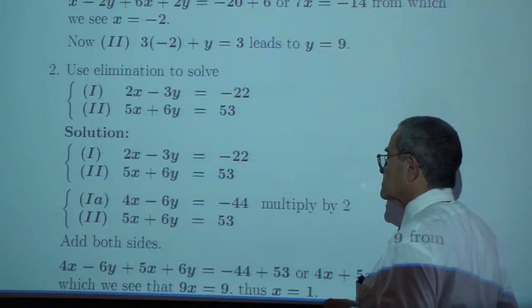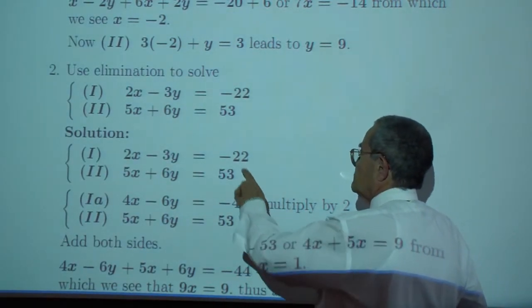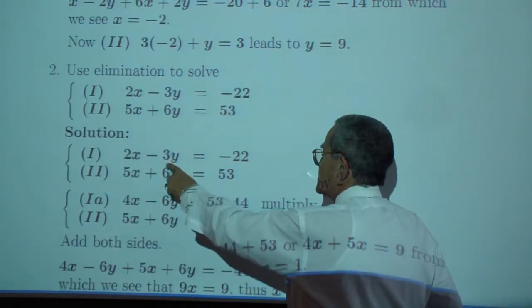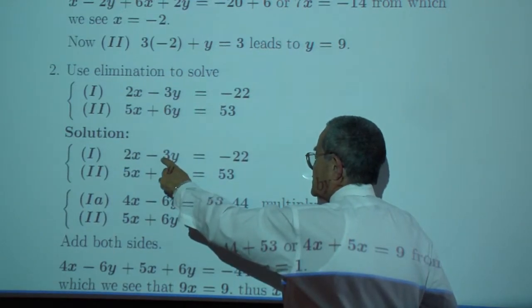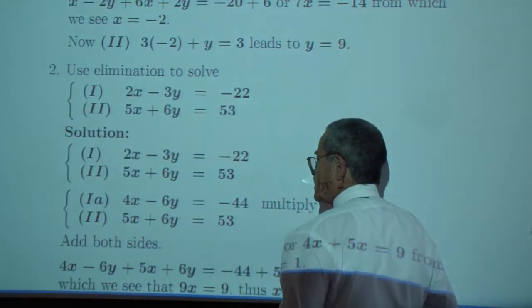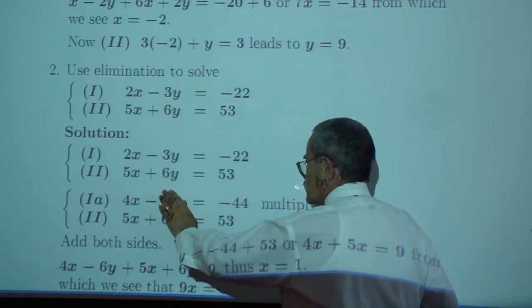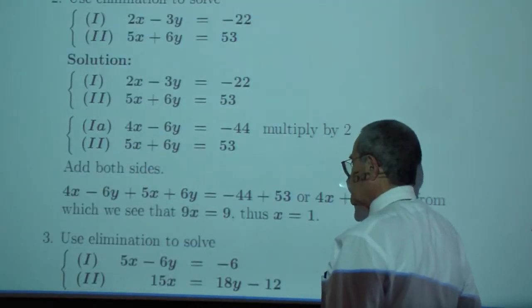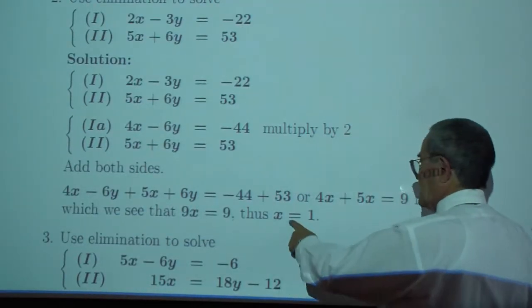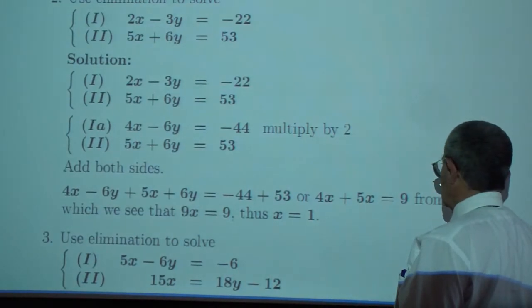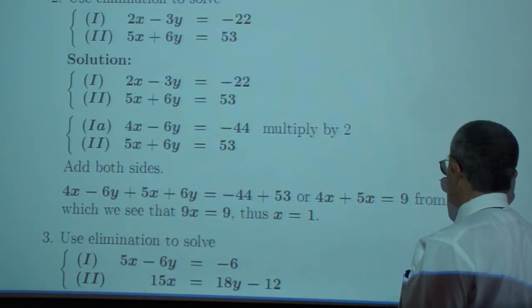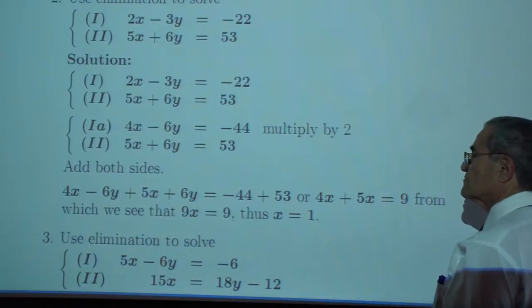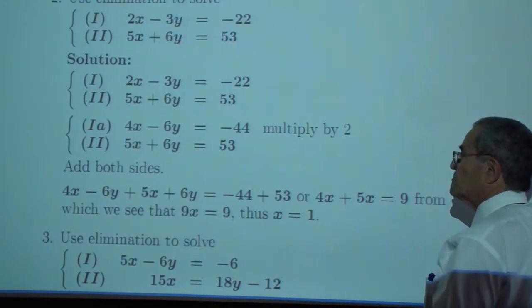In the next example, I multiply by 2 in order to turn the negative 3 into a negative 6, and negative 6y plus 6y gets eliminated. And we come up with x which is equal to 1.